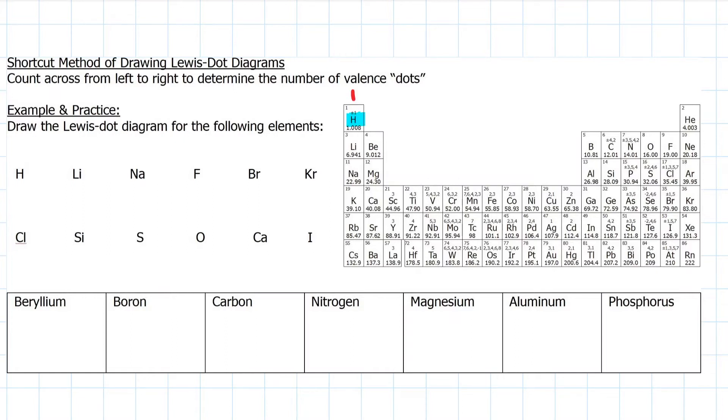Hydrogen in the first column, well, one dot. Same for lithium and sodium. Fluorine is one, two, skip a few, three, four, five, six, seven, so seven dots grouped in pairs.